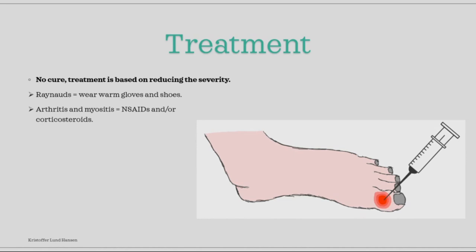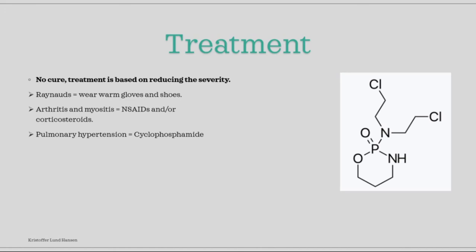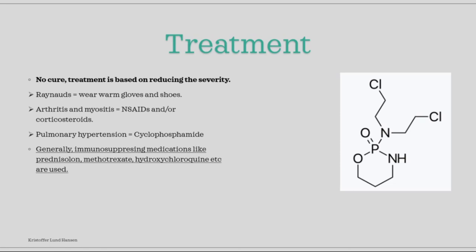For pulmonary hypertension, we use cyclophosphamide, which is a form of immunosuppressing medication that has shown highly effective use in pulmonary hypertension. Generally, many kinds of immunosuppressing medications can be used to treat the disease — corticosteroids, methotrexate, and hydroxychloroquine are all common for treatment.